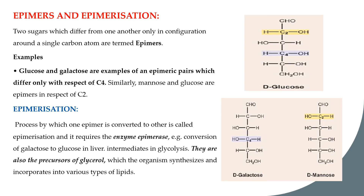Epimers are isomers formed by the process called epimerization. Comparing glucose and galactose, both have the formula C6H12O6, but they differ at carbon number 4: in galactose the OH on carbon 4 is on the left side, while in glucose it is on the right side — the rest of the structure is the same. Similarly, mannose and glucose differ only at carbon number 2, making them epimers of each other.